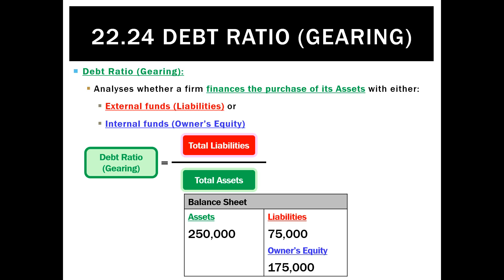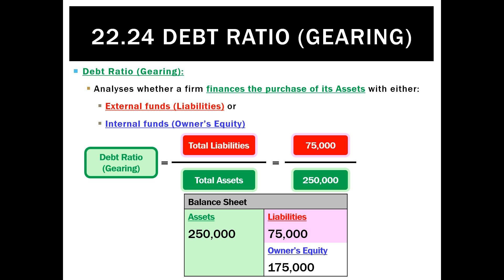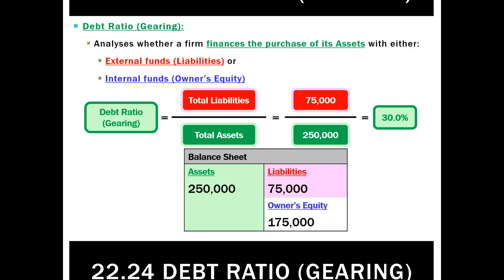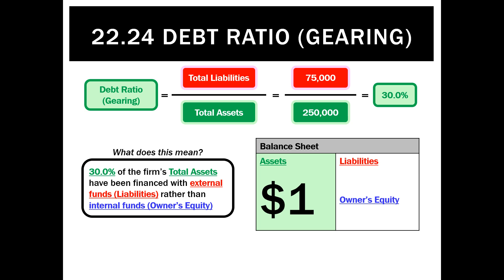We calculate the debt ratio as total liabilities divided by total assets — that's all current and non-current for both sections. In this example, with liabilities of $75,000 and assets of $250,000, that gives a ratio of 30%. This means that for every dollar of assets the business has, $0.30 has been financed from liabilities, and 70% from owner's equity. So we'd say 30% of the firm's total assets have been financed with external funds or liabilities rather than internal funds or owner's equity.